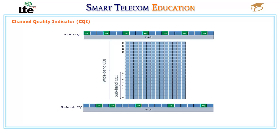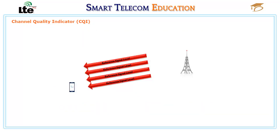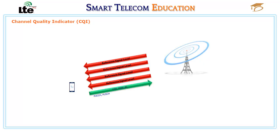PMI can be wideband or subband. The Rank Indicator influences the number of CQI reports, which refers to different code words transmitted from the E-NodeB. A code word is the output of a turbo coder. The UE continuously monitors the reference signal level embedded within the downlink radio channel.